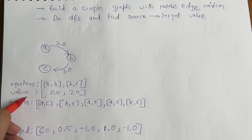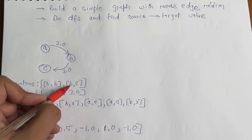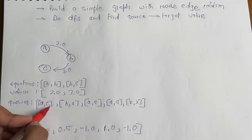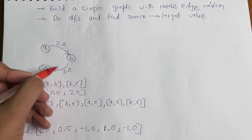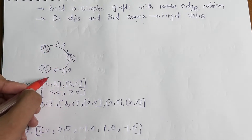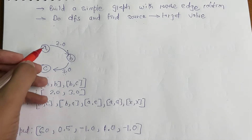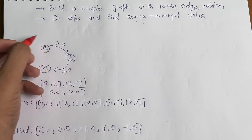We have a→b with value 2.0 and b→c with value 3.0. For the query a→c, we can calculate the answer as 2.0 × 3.0 while going from a to b and b to c. We start with 1.0 because it is the multiplicative identity — multiplying 1.0 by any number gives the same value. So going a→b→c gives us 3 × 2 × 1 = 6.